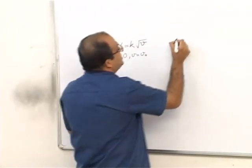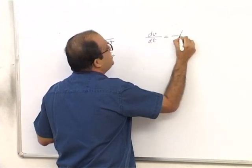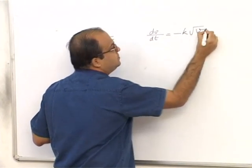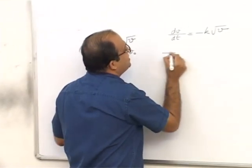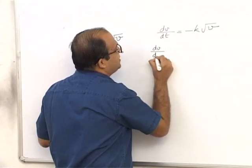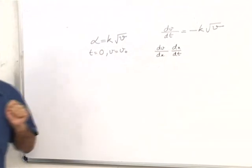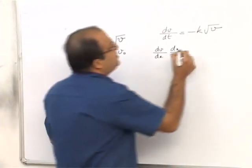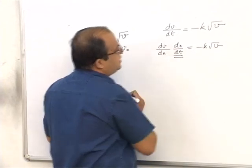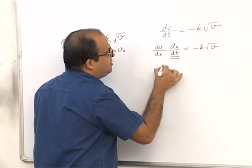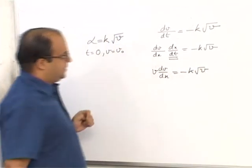We start again with the equation dv/dt is equal to minus k root v. Now dv/dt can be written as dv/dx times dx/dt by chain rule of differentiation. So this becomes minus k root v. Now dx/dt itself is v. So you get v times dv/dx is equal to minus k root v. Then it will extend for v and x.